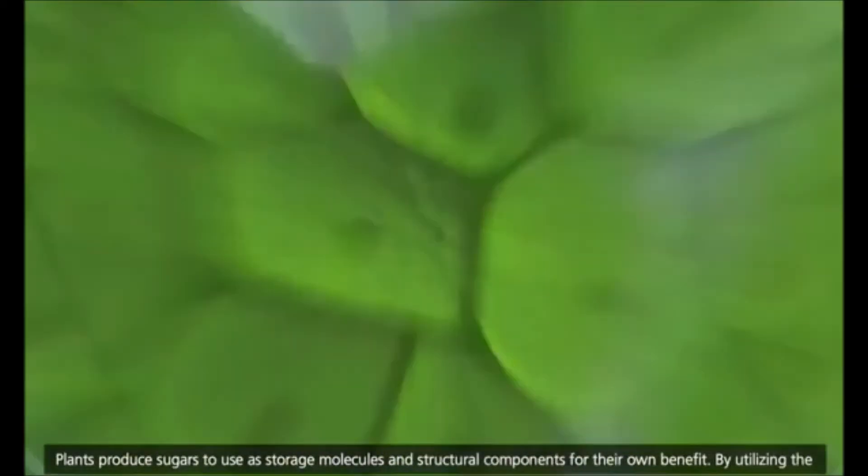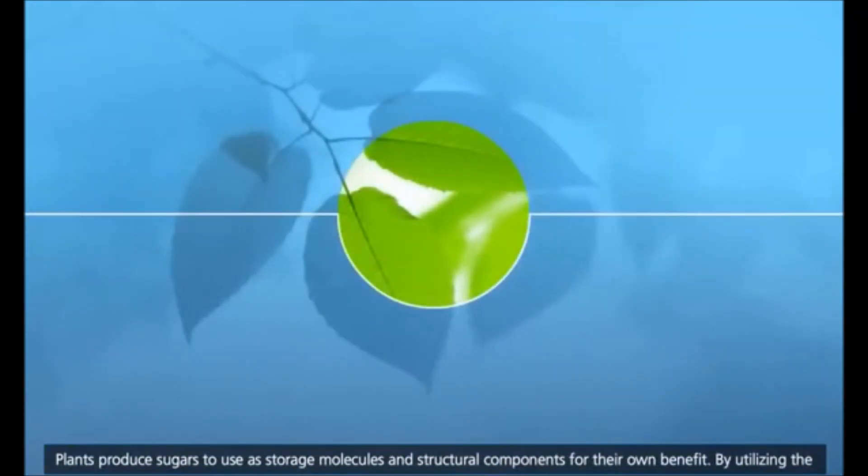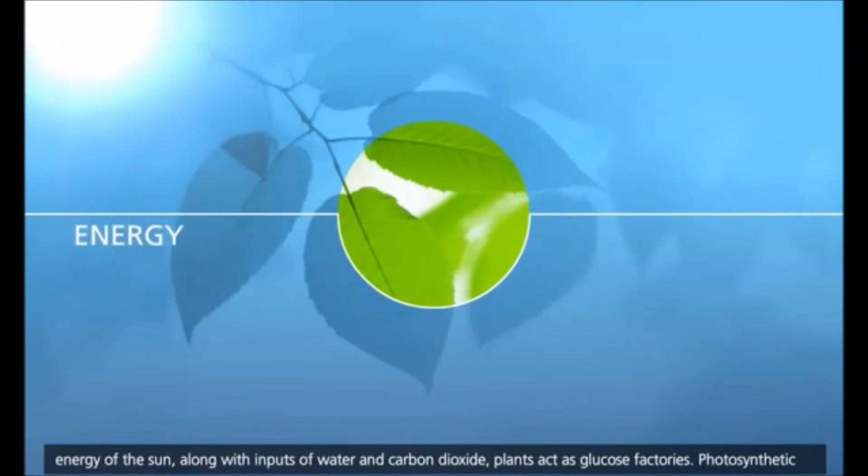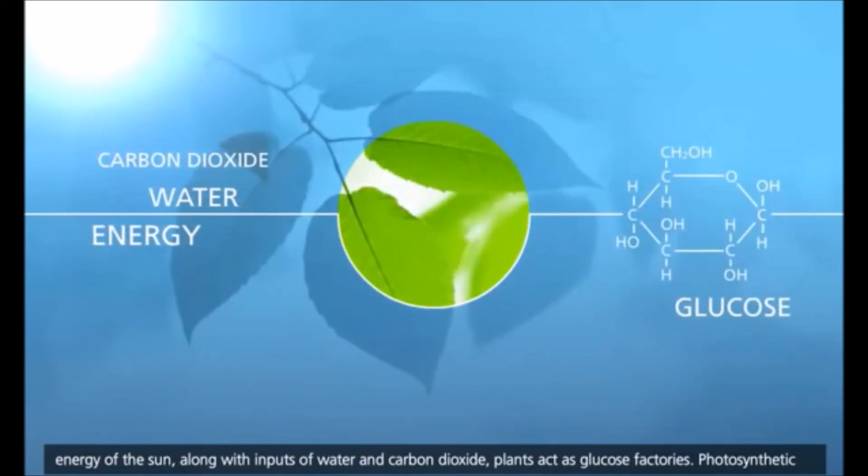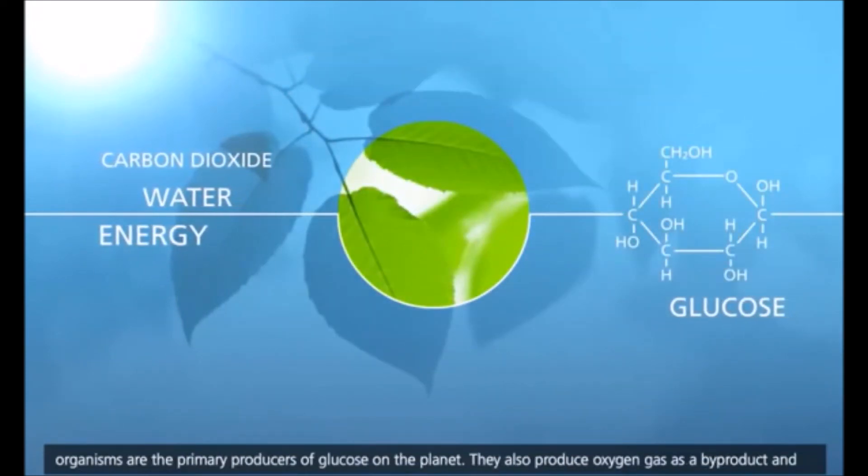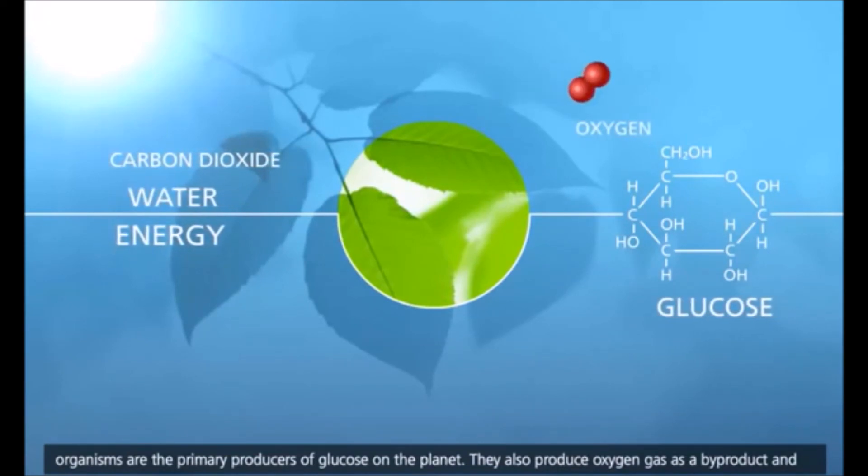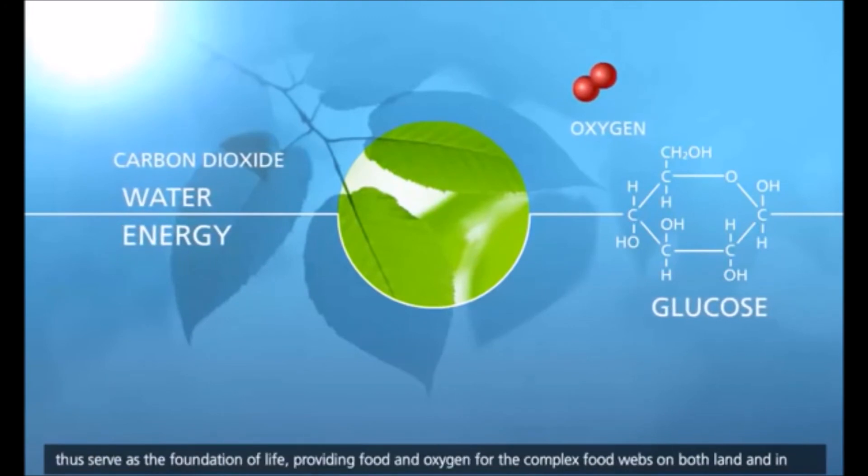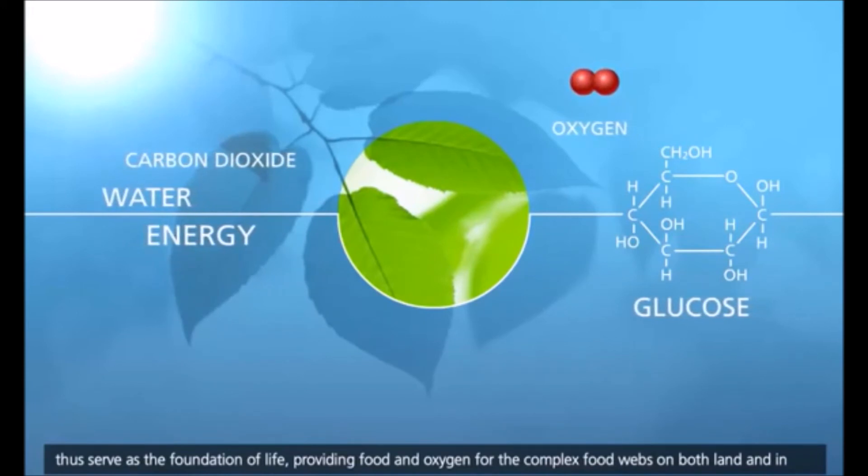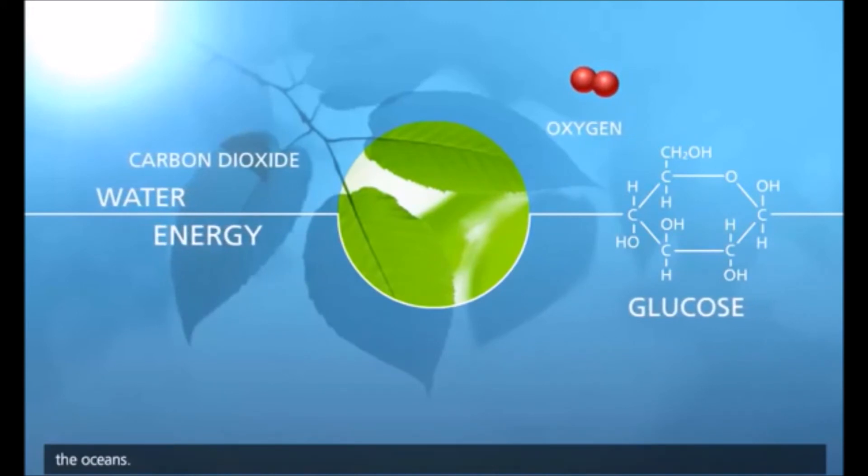Plants produce sugars to use as storage molecules and structural components for their own benefit. By utilizing the energy of the sun, along with inputs of water and carbon dioxide, plants act as glucose factories. Photosynthetic organisms are the primary producers of glucose on the planet. They also produce oxygen gas as a byproduct, and thus serve as the foundation of life, providing food and oxygen for the complex food webs on both land and in the oceans.